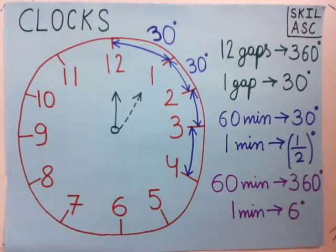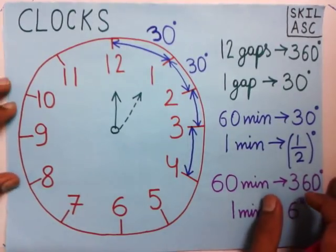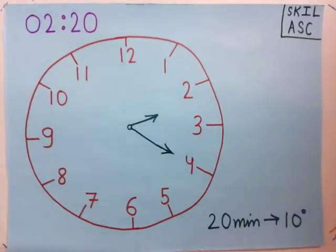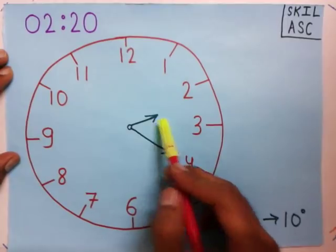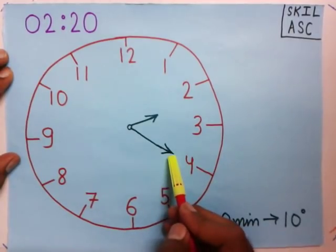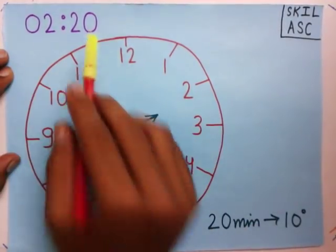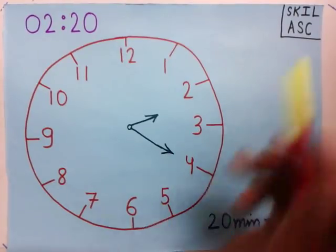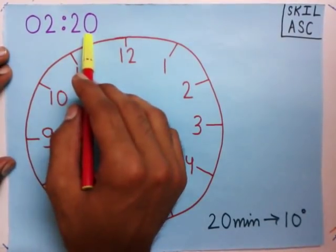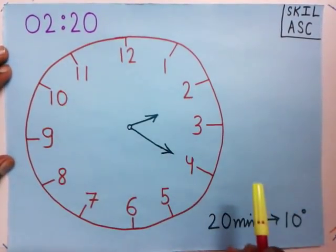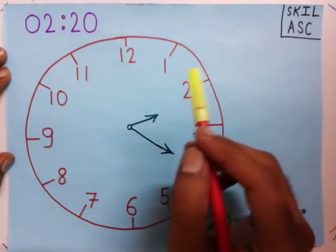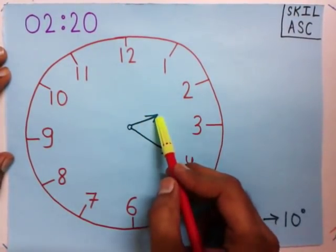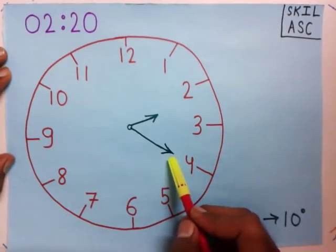Welcome to learn about clocks. We are going to learn how to find the angle between the hour and minute hand at a given time. Suppose the time is 2:20 and at this time we have to find the angle between the hour and minute hand.